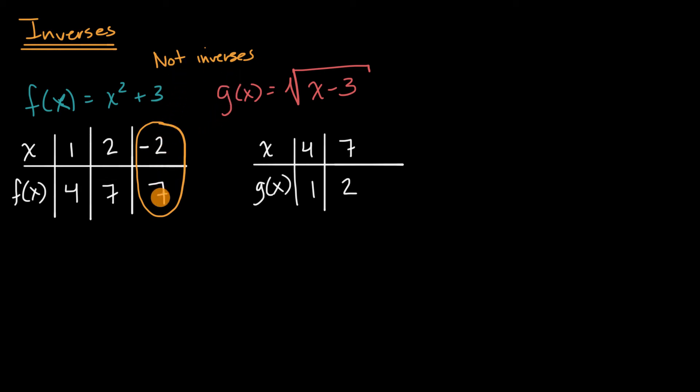But you actually can't use specific points to prove that they're inverses because there's an infinite number of values that you could input into these functions. And there's no way that you're going to be able to try out every value.